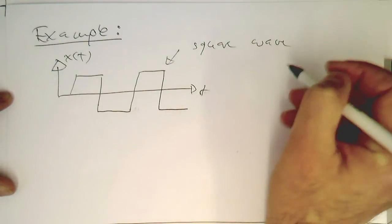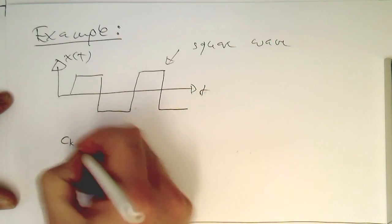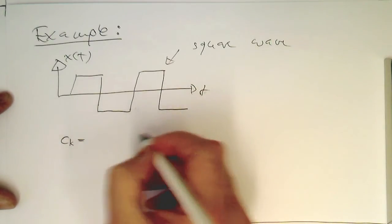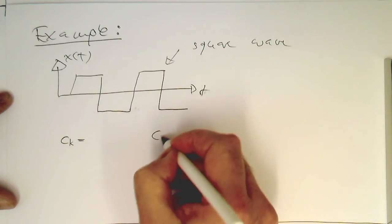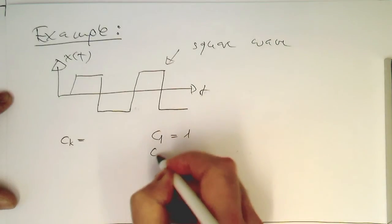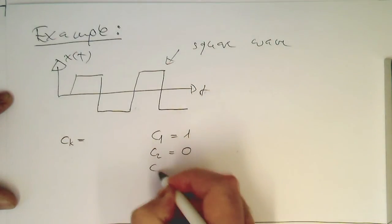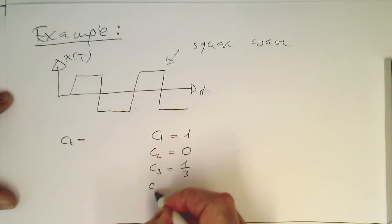What I propose is setting the CKs in the following way: C1 is 1, C2 is 0, C3 is a third, C4 is 0, and C5 is a fifth.